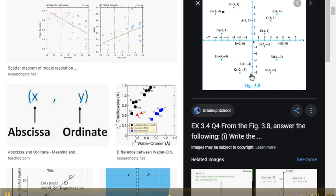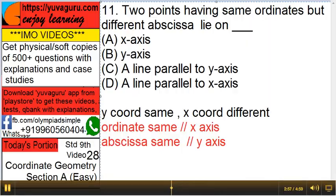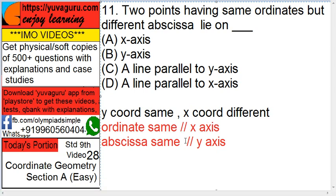Okay, so remember the golden rule: ordinate same, parallel to x-axis; abscissa same, parallel to y-axis. Only the point is, the other coordinate should be different.